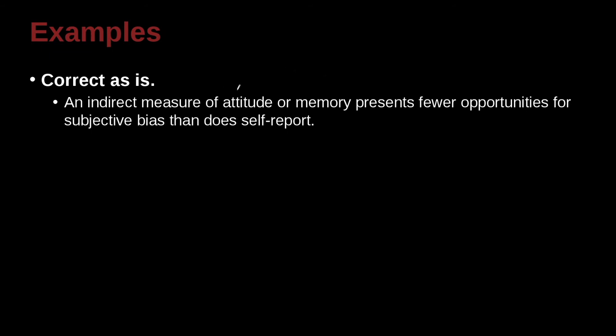An indirect measure of attitude or memory presents fewer opportunities for subjective bias than does self-report. So a self-report is a type of report. Now we don't have anything here to modify, do we? But that's just because we stuck it at the end of the sentence. It is one kind. There are other kinds of reports, aren't there? There is an indirect measure of attitude or memory. There's all kinds of ways to measure this. This is one way to measure it.